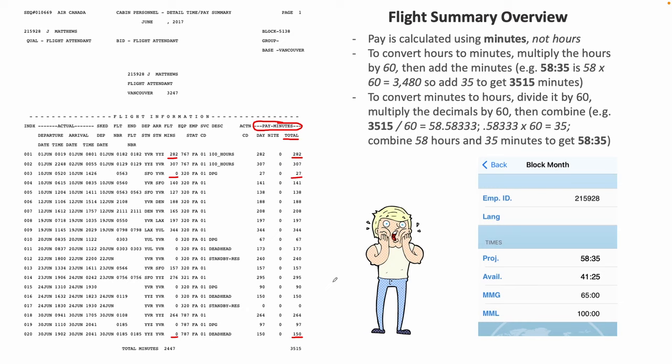For the deadhead at the very bottom, you'll see zero in flight minutes but 150 in pay minutes. For a Toronto to Vancouver flight, 150 minutes would be extremely good — that would be just two and a half hours, which is simply amazing. The reason 150 appears is because when we deadhead, we get half of the flight time credit. So for the deadhead, flight minutes shows zero, but if you want to know the actual flight time, take the pay minutes and multiply by two.